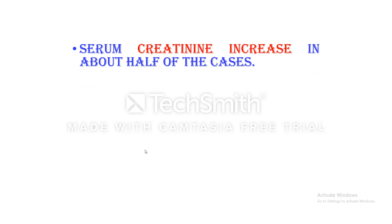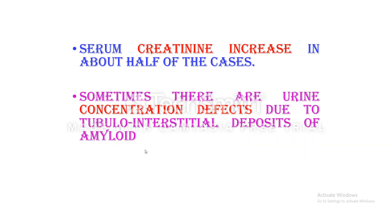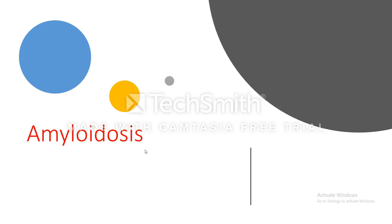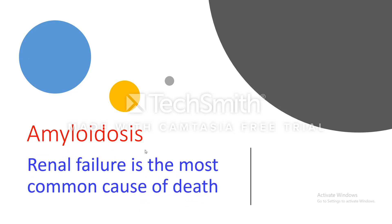Serum creatinine increases, indicating disturbance in renal function, in about half of cases. Sometimes there are urine concentration defects due to tubulo-interstitial deposit of amyloid — this affects tubular concentration and leads to urine concentration defects. And ultimately, hypertension and renal failure. The most common organ affected in amyloidosis is the kidney, and the most common cause of death is renal failure.